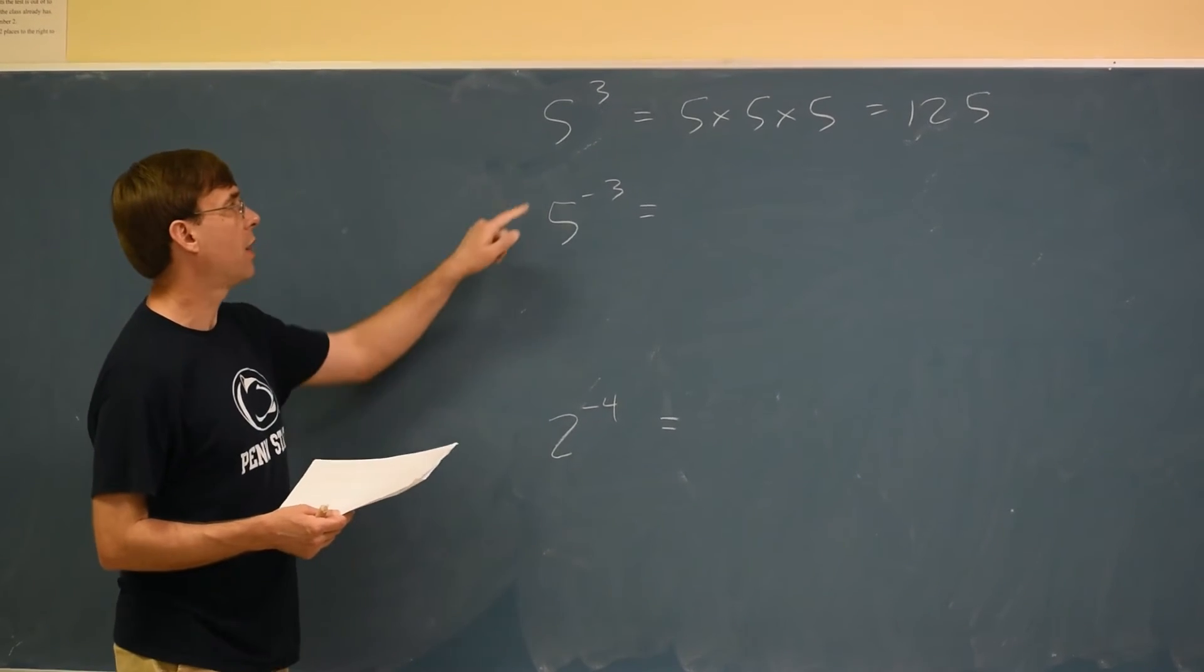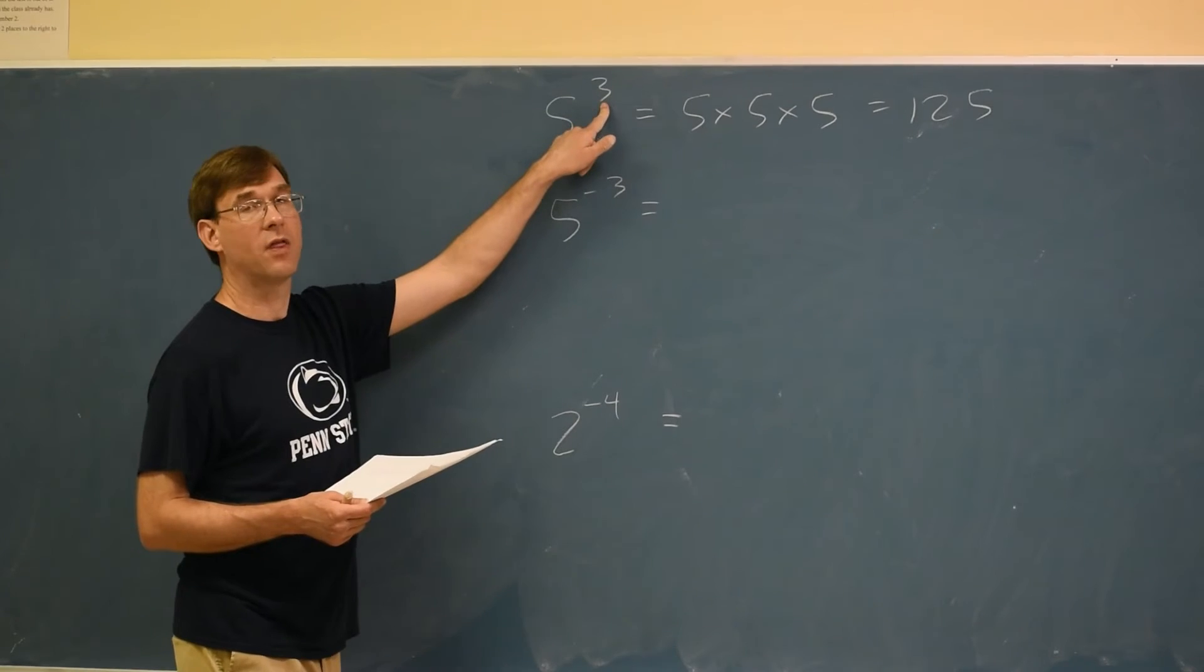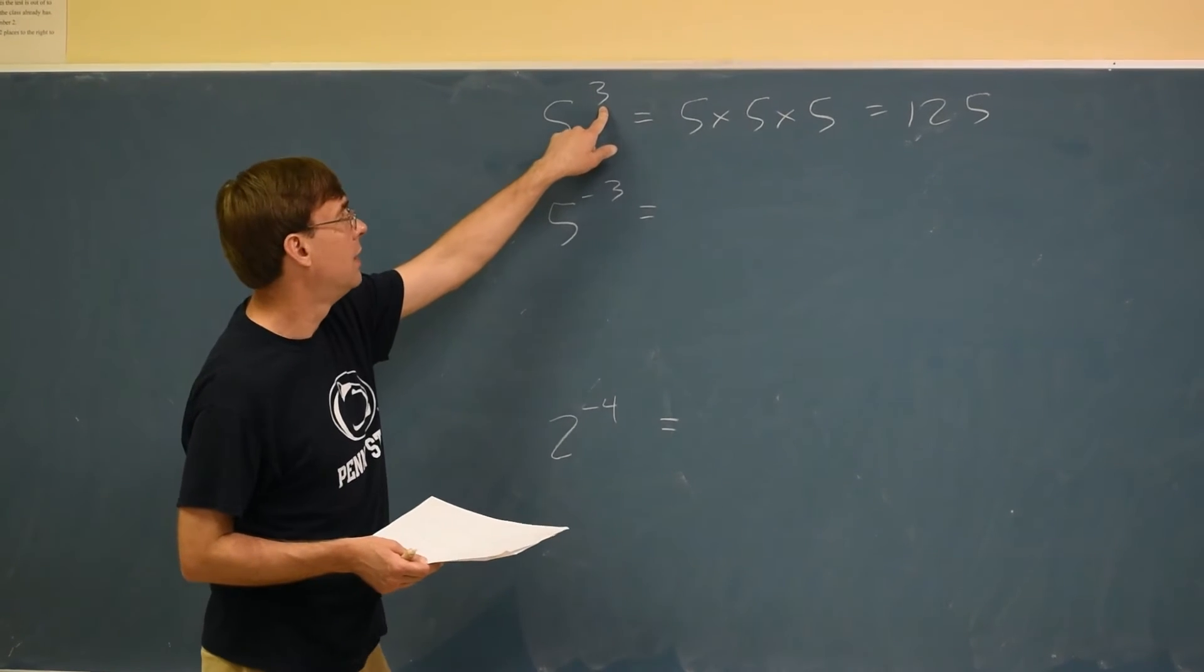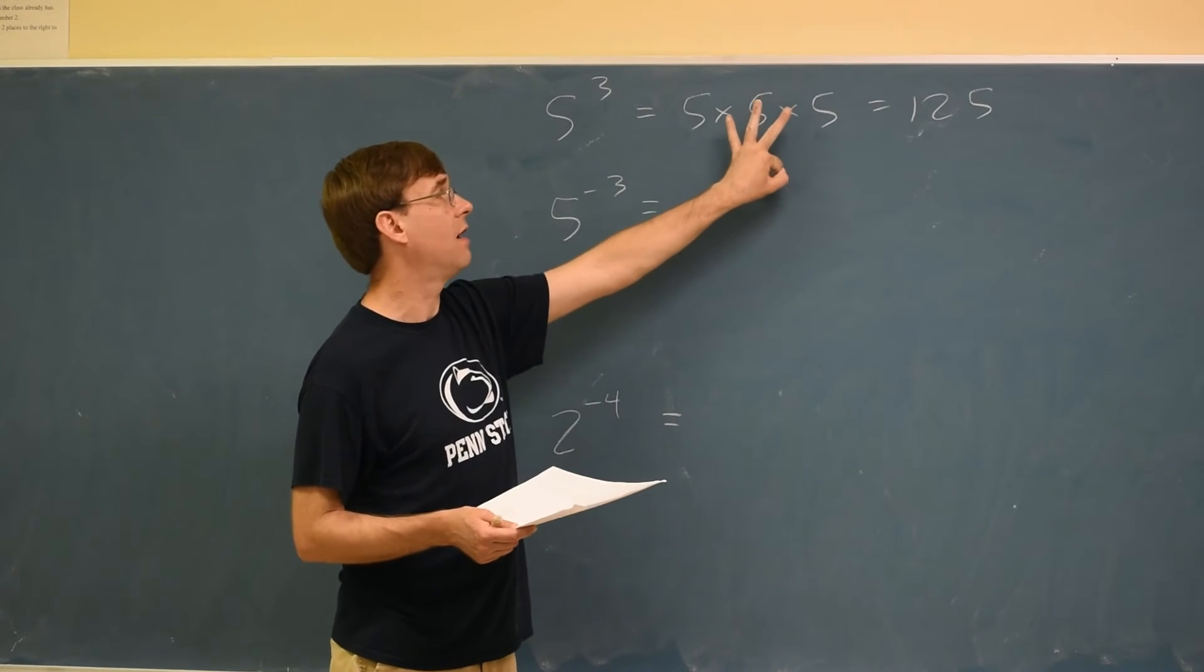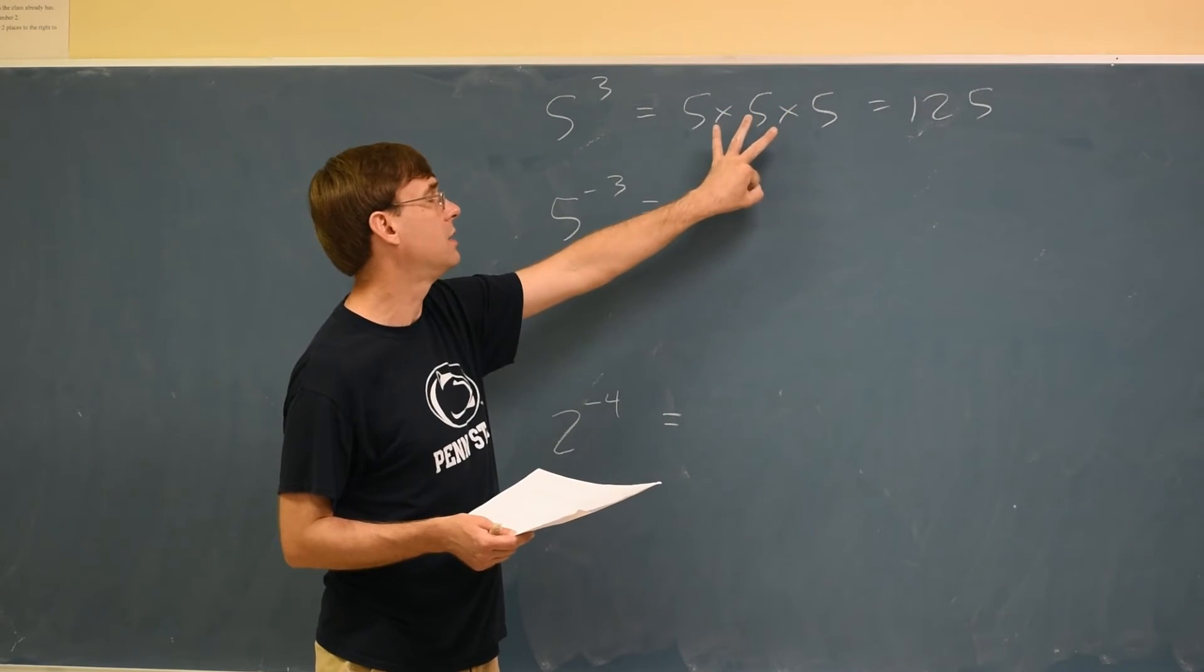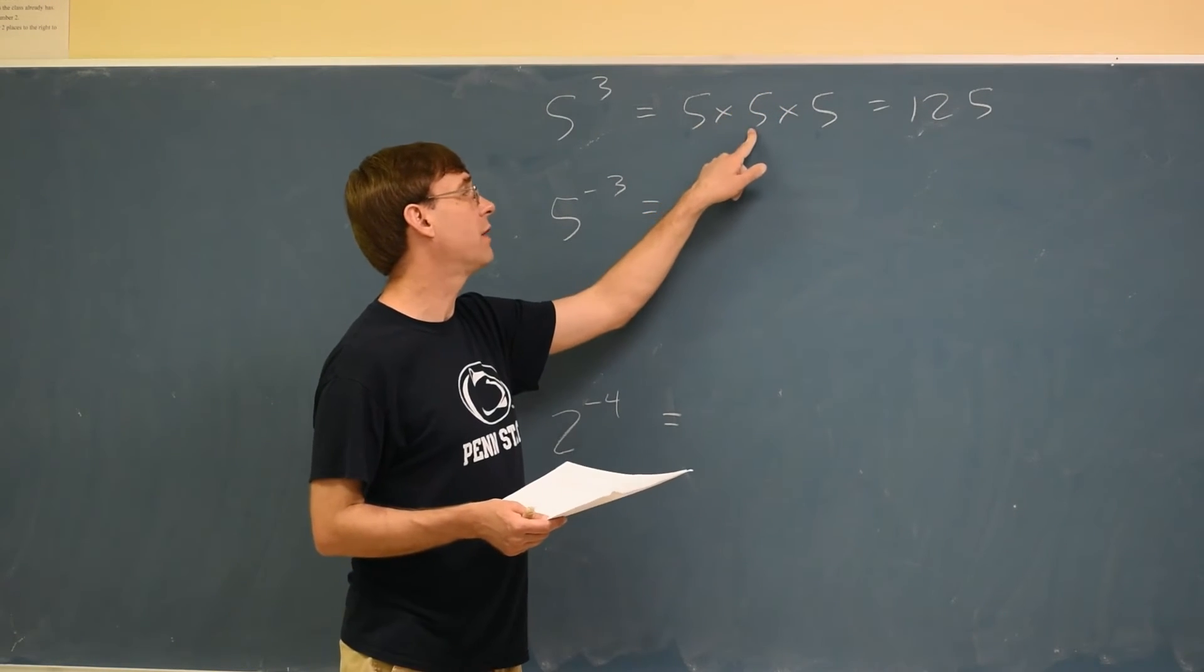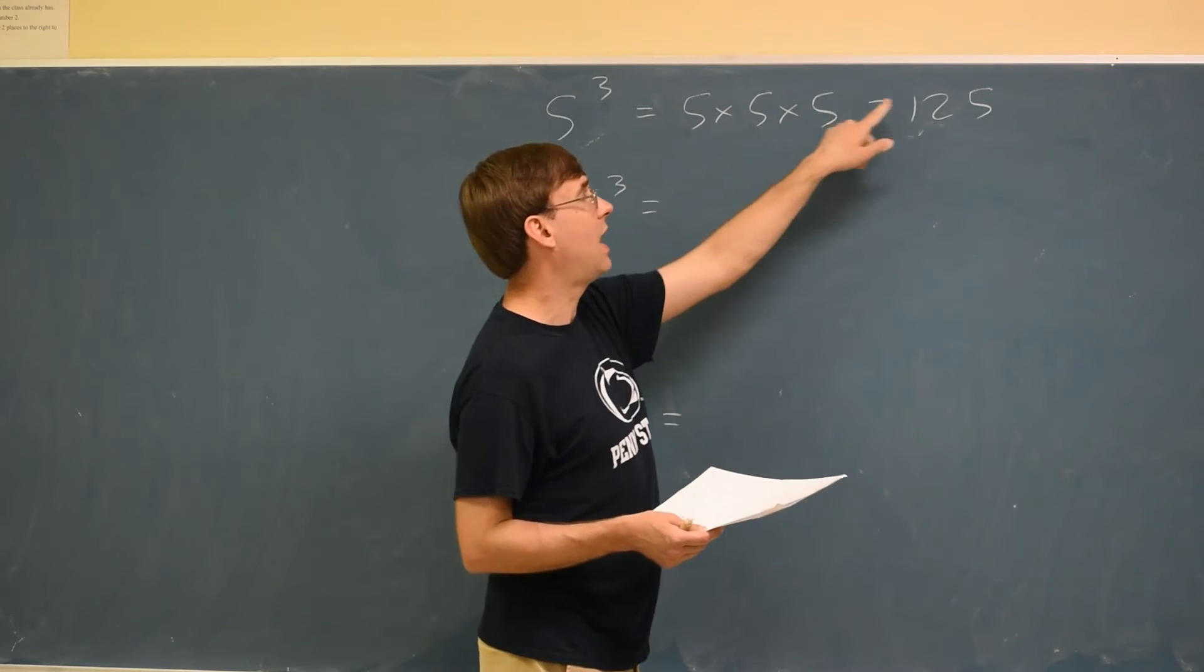Quick review of normal exponents. If I ask you to do 5 to the third power, or 5 cubed, that means 5 times 5 times 5. Have three fives all multiplying each other. 5 times 5 is 25. 25 times 5 is 125.